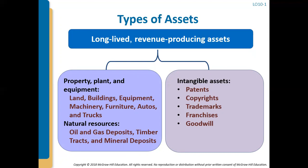Think about Amazon — they now have their own delivery trucks, which are long-lived assets that help them produce revenue. Seeing an Amazon truck is exciting, especially when you know you're getting a delivery. That would be classified as property, plant, and equipment.